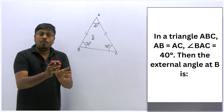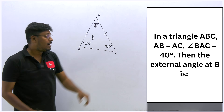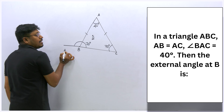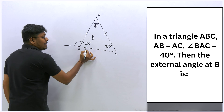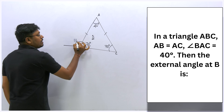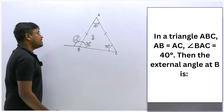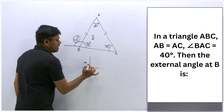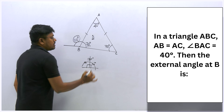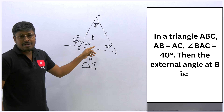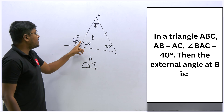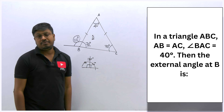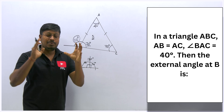Our target is the external angle of B. The internal angle of B is 70 degrees. Since angles on a straight line sum to 180 degrees, the external angle of B is 180 − 70 = 110 degrees. So the answer to question 1 is 110 degrees.